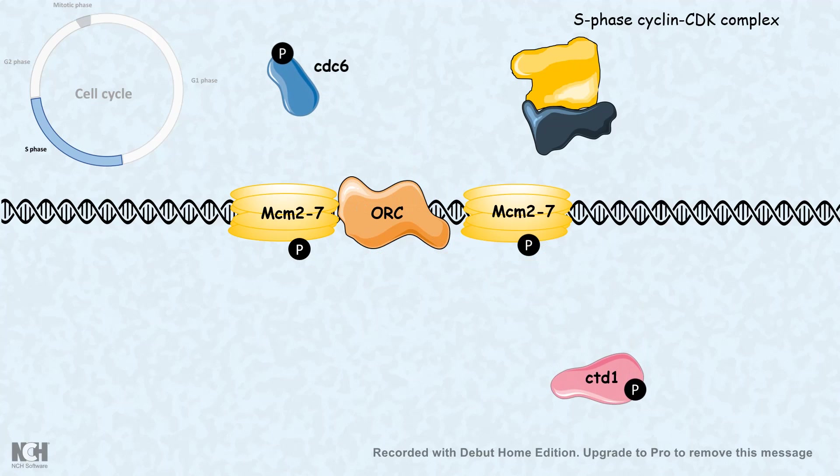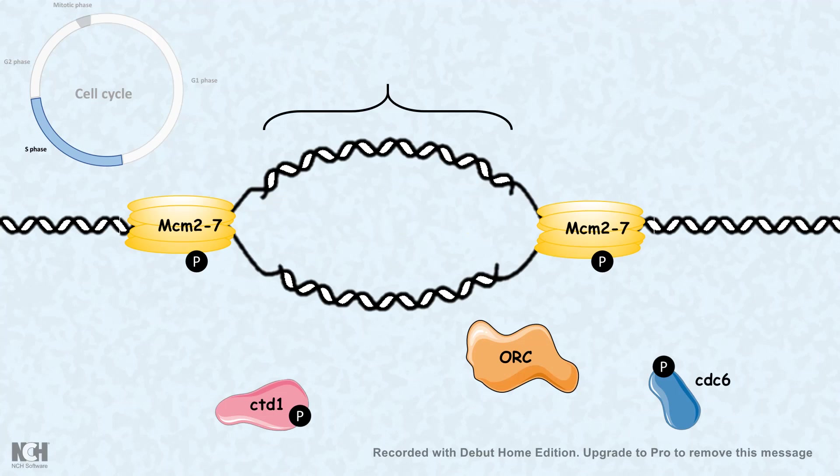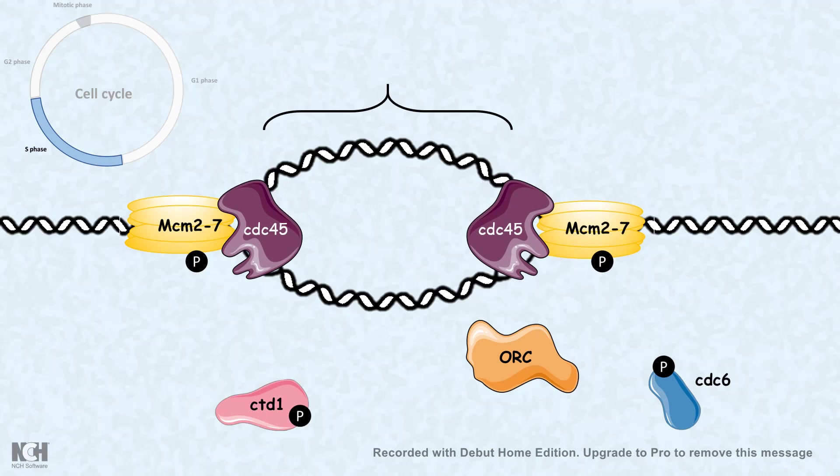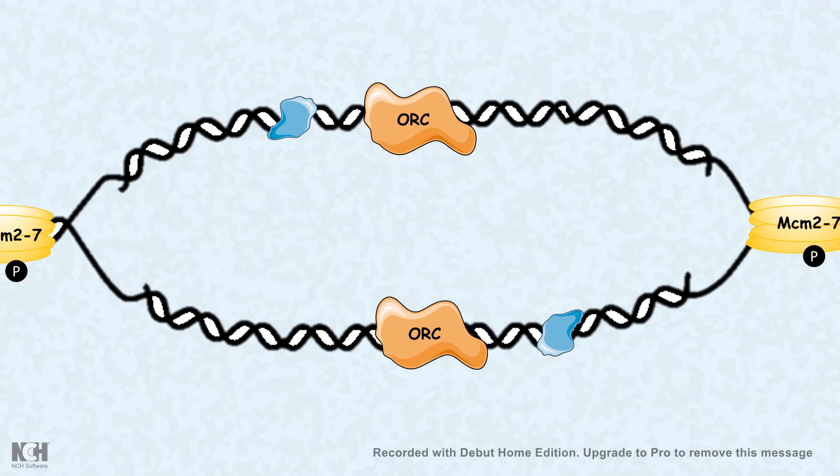After that, what happens is the CTD1 and CDC6, just after they are phosphorylated, that was the trigger point when the replication started. They would dissociate from the ORC complex. ORC itself would fall off while the replication bubble is created. This MCM helicase actually unwinds the strand and other enzymes allow the replication to progress smoothly, forming the replication bubble to expand and creating new DNA strands.